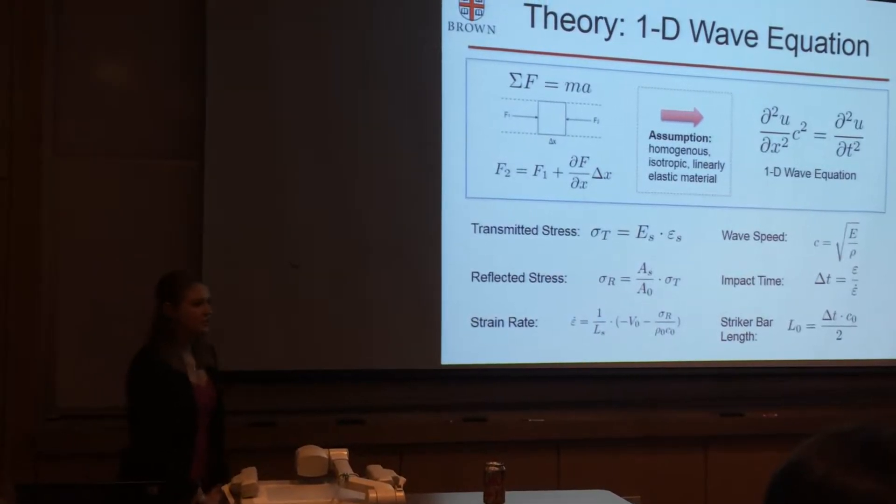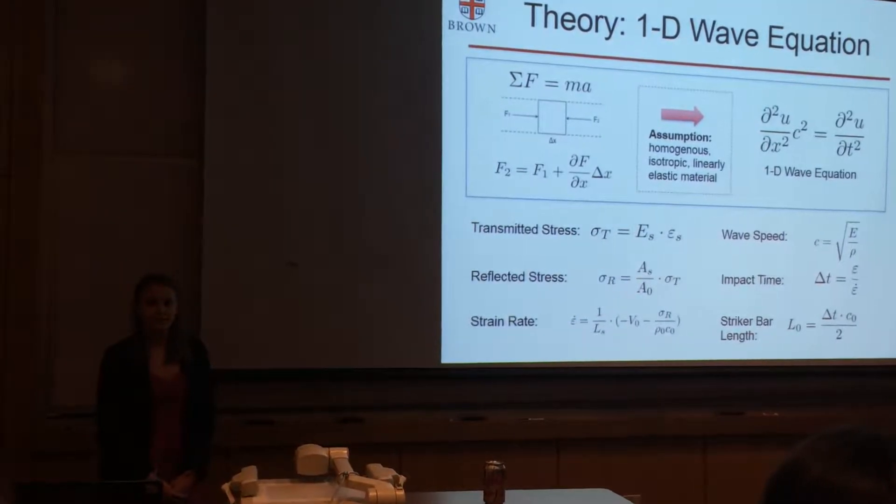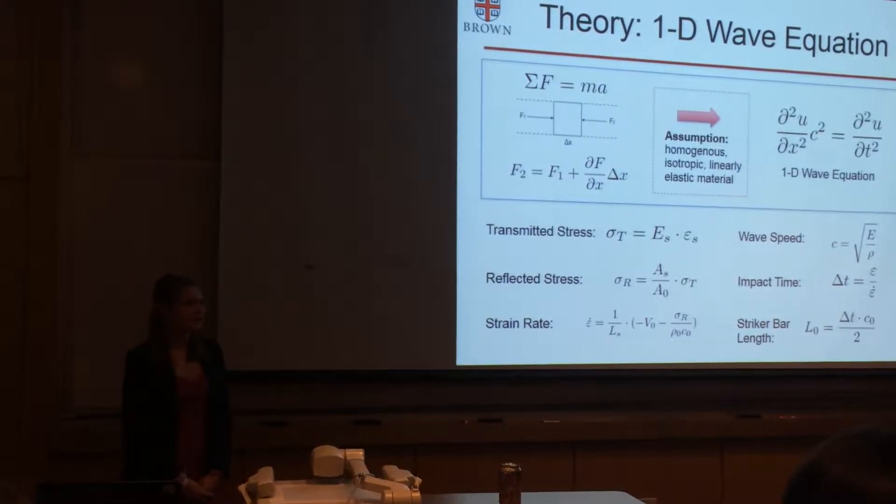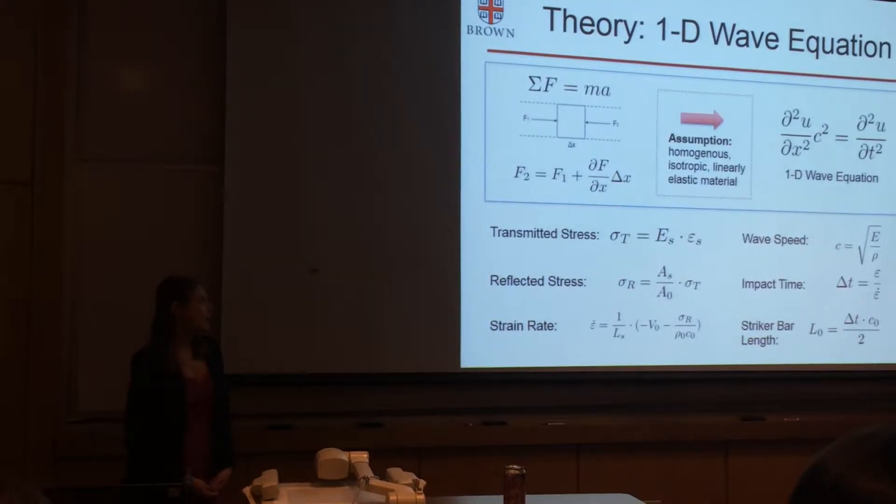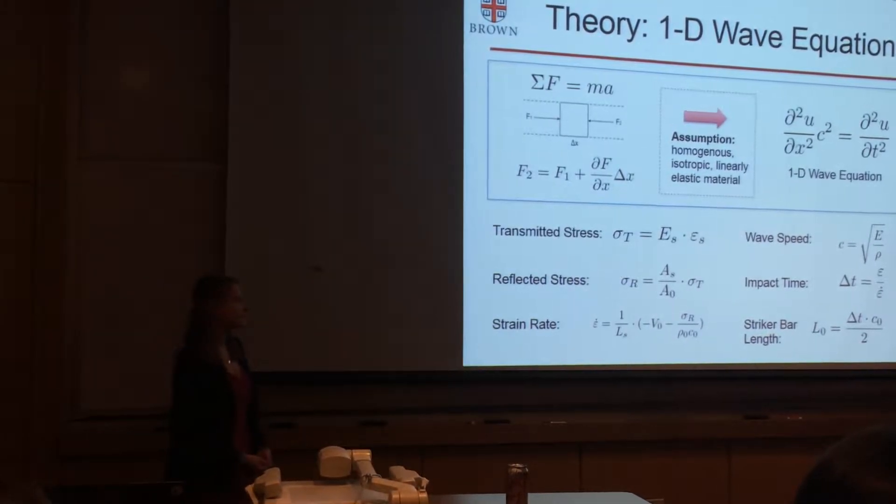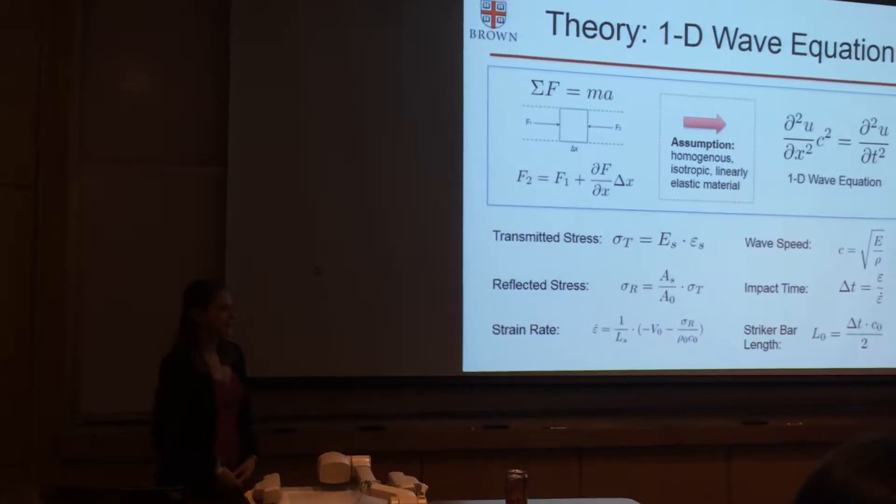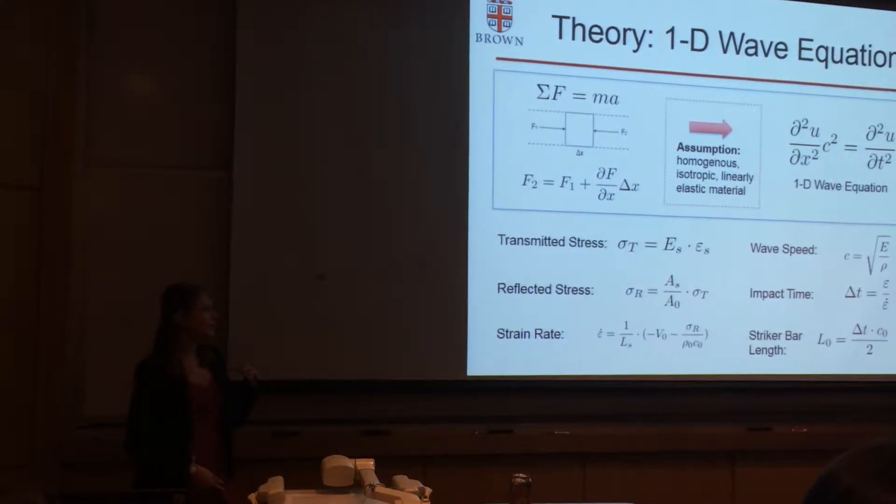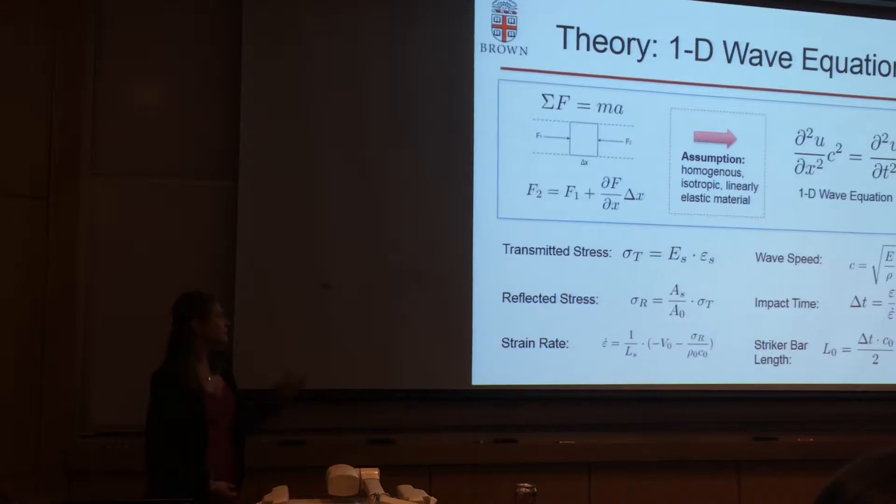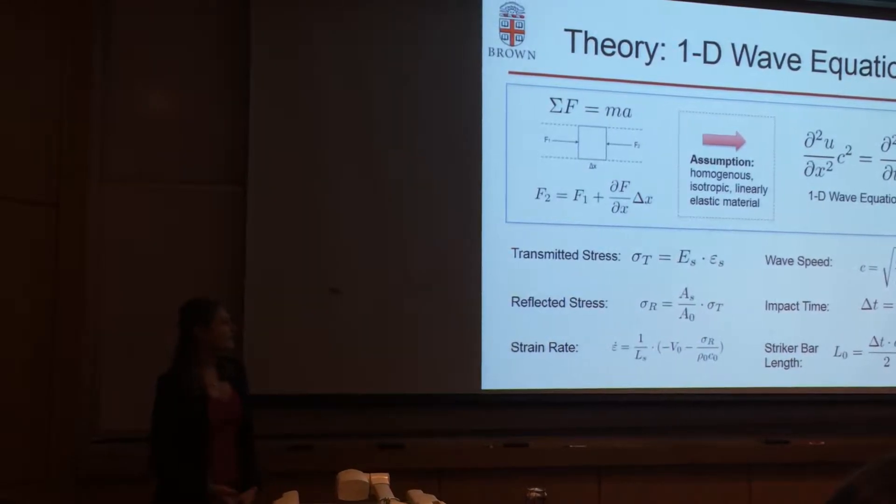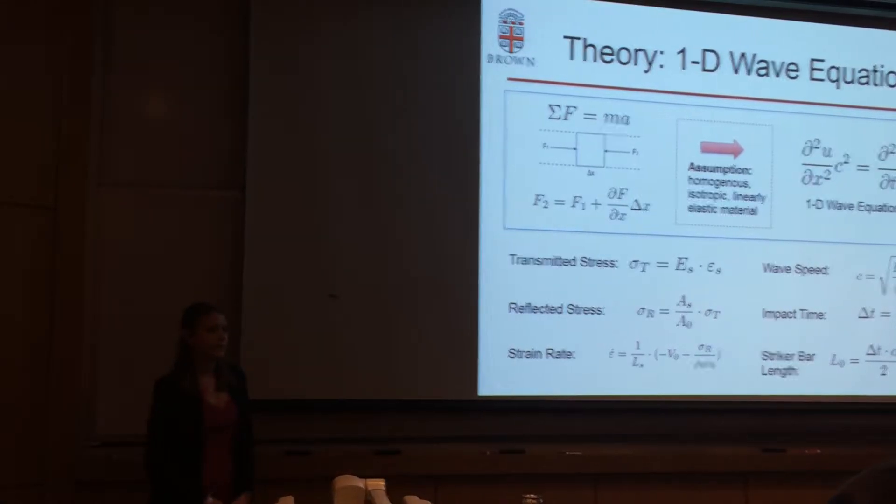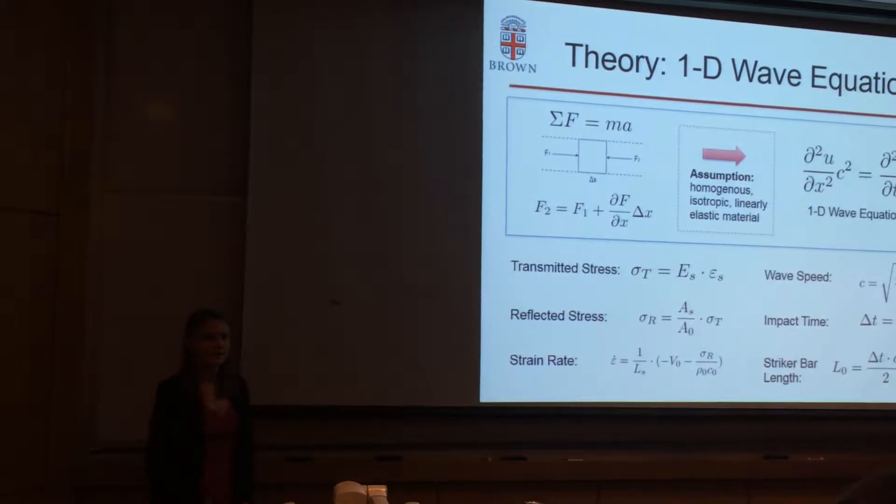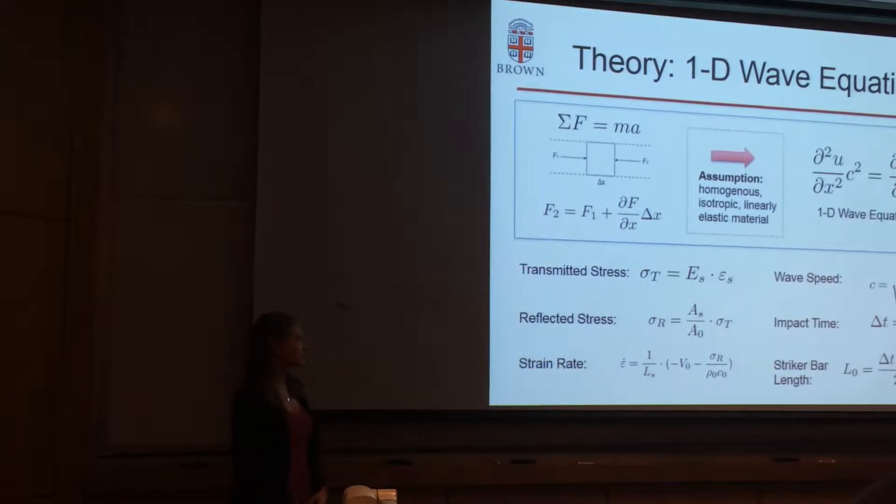In order to determine what kinds of striker bars and drop heights were needed to get the strain rates and strains that we desired to study I had to start to understand the system. On the top left there's a diagram with a small portion of the striker bar and a force balance on it. Using this simple force balance combined with the assumption that the materials were homogenous isotropic linearly elastic materials I derived the 1D wave equation.